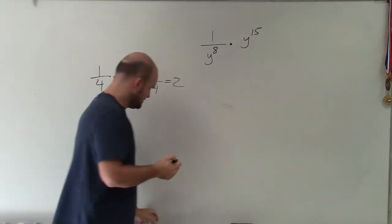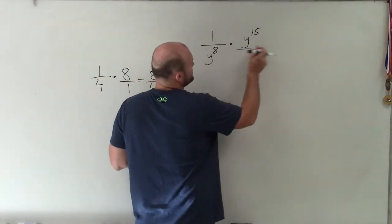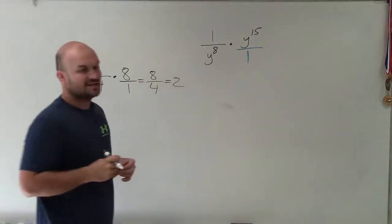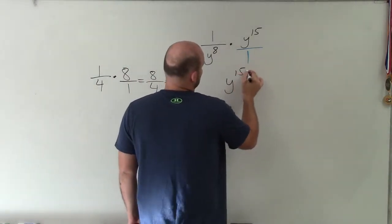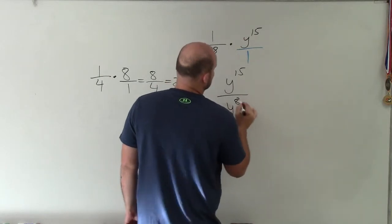So to solve for this, or to simplify this, basically all I'm going to do is rewrite that as a fraction. Now I can multiply across, and I get y to the 15th divided by y to the 8th.